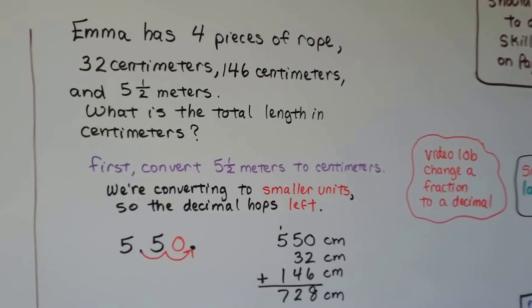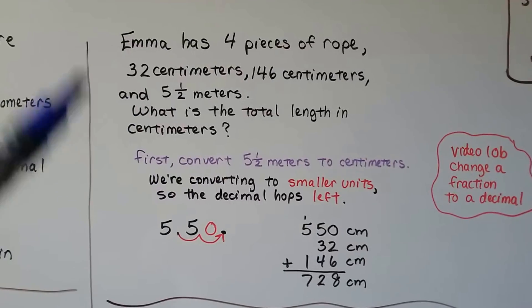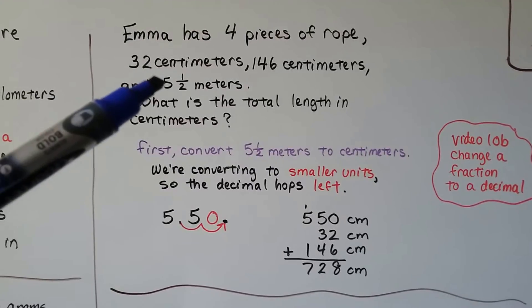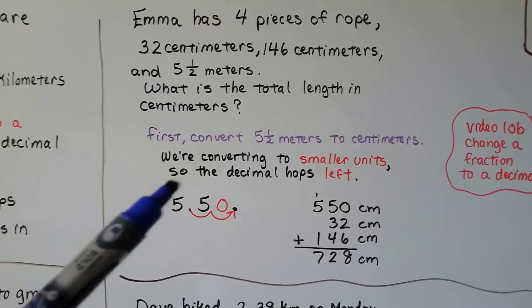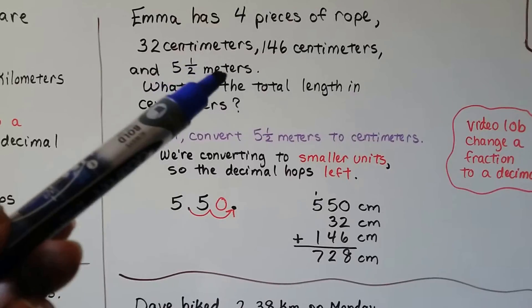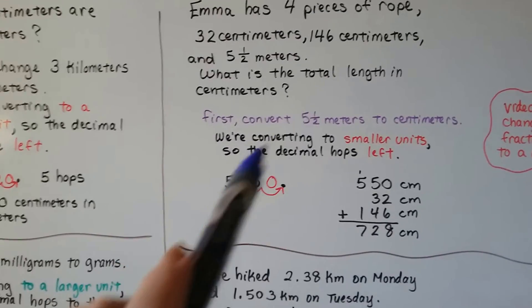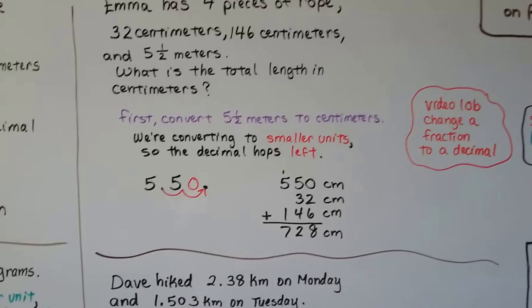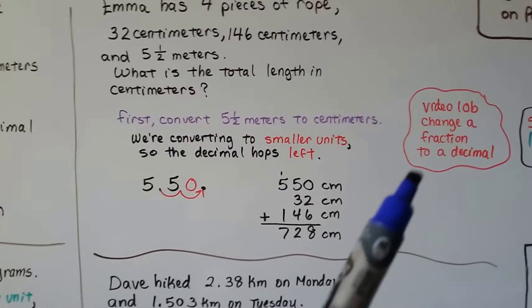Now, we talked about addition and subtraction of decimals and we talked about changing a fraction to a decimal. The fraction to a decimal was video 10b and that's going to come up. Emma has four pieces of rope. She's got 32 centimeters, 146 centimeters and five and a half meters. What is the total length in centimeters? Well, this one's five and a half meters. So we need to convert it to centimeters and we're going from meters to centimeters. That's going to smaller units because a meter is bigger than a centimeter. And here's meter, here's centimeter. We're going to go one, two hops. So changing it to a decimal, the five and a half is a 5.5. So we're going to go from here, two hops. So we have 550 centimeters. Then we can add the 32 centimeters and the 146 to it and get a total of 728. So it's really important that you know how to change a fraction to a decimal here.